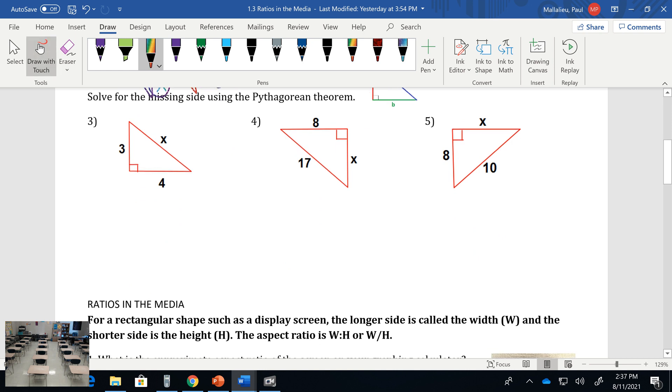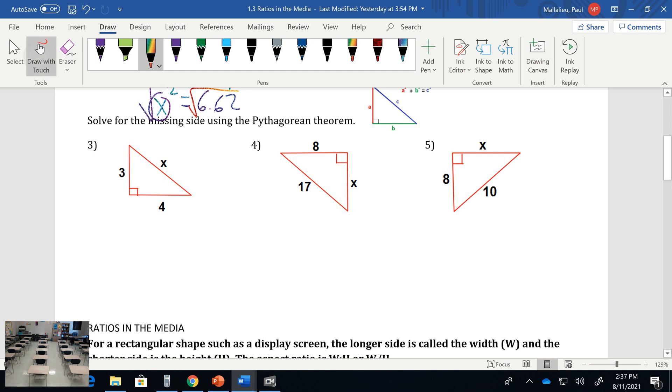That takes you back to your geometry year, your sophomore year for most of you. Looking to find a side you don't know, we used to go over this in geometry. a² plus b² equals c², where your a is a side, your b is a side, and your c is your hypotenuse.